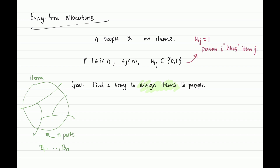The goal is to distribute these items among the people — give everybody some subset of items. The allocation should be a perfect partition: every item is assigned to exactly one person. Nothing is left out, nothing is shared, though it is possible that a person goes empty-handed or receives every item. We want the assignment to be complete — no item left unassigned — and unambiguous — every item goes to exactly one person.